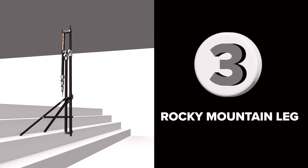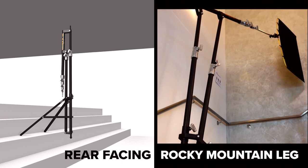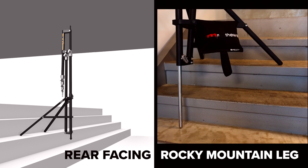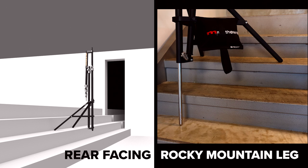The Minimax features three Rocky Mountain legs. One Rocky Mountain leg drops directly out of the rear upright, helping you level the base when you are setting up going up a flight of stairs or in a similar situation.